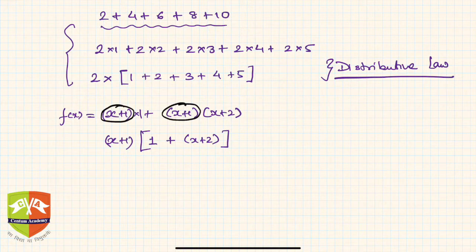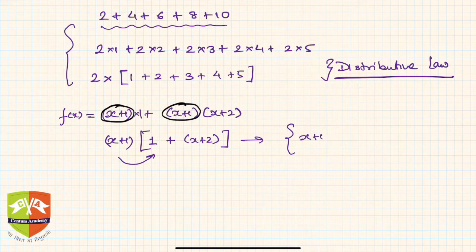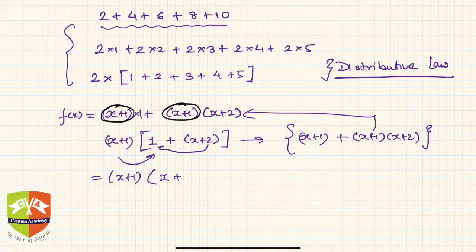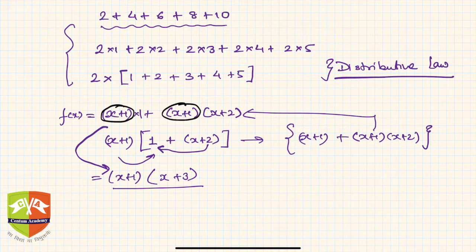To check whether we have taken the common factors correctly, we can expand the result — it should give back the original polynomial. Expanding (x+1)(1 + (x+2)) gives (x+1) + (x+1)(x+2), which matches what was given. So we have taken the right common factor. This simplifies to (x+1)(x+3), since 2+1 = 3.